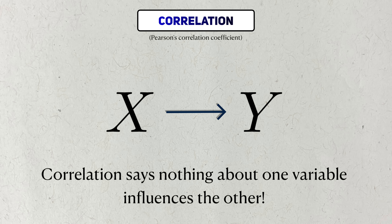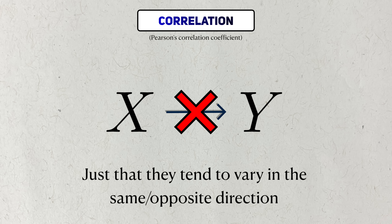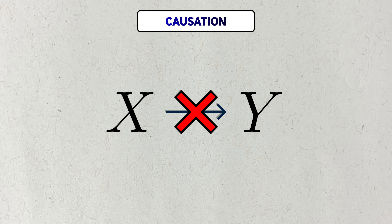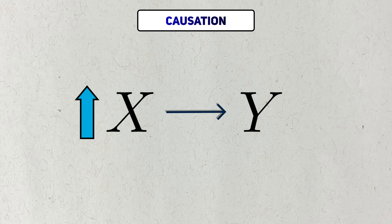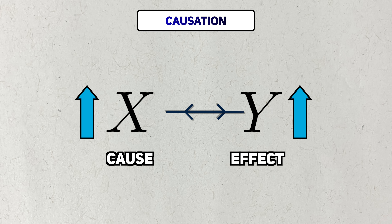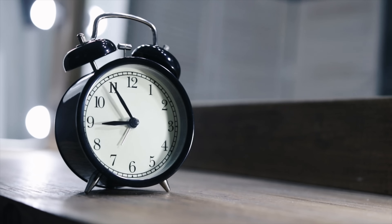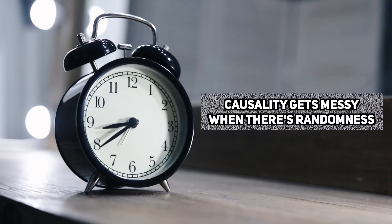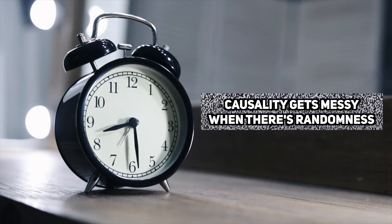Correlation says nothing about how one variable affects the other — only that they tend to vary from the mean in the same or opposite way. On the other hand, causation marks a clear distinction between the two variables. A change to one variable, the cause, creates a change in the other variable, the effect. Unlike correlation, you can't flip the relationship. The effect depends on the cause, not the other way around. Causality is a complicated subject, and it only gets more complicated in statistics, where we also have to deal with randomness.